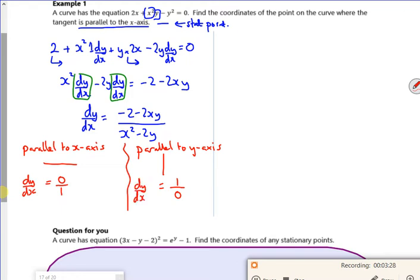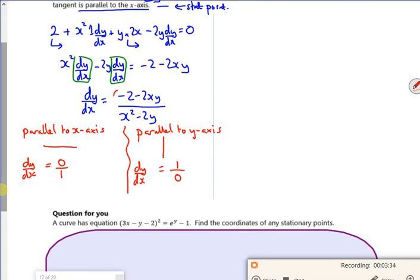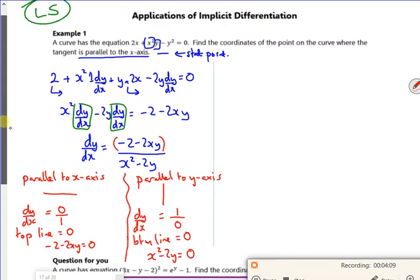So what I can do, I can be a bit sneaky. If I want a stationary point, I would just put the top line equal to 0. So if I wanted parallel to the x-axis, I'd have the top line equal to 0, so minus 2 minus 2xy is equal to 0. But if I wanted it parallel to the y-axis, I'd put the bottom line equal to 0. This is a little bit more than what's in your pack, but it comes up in exams. We've just been doing stick the top line equal to 0.